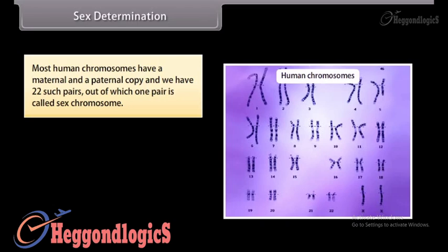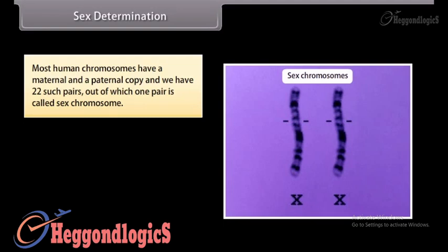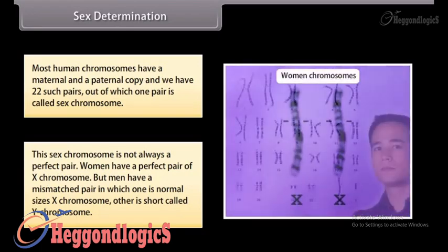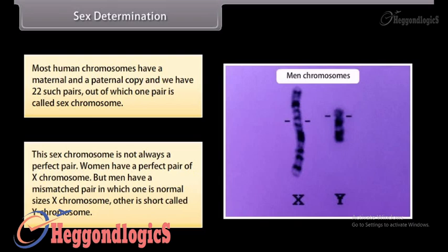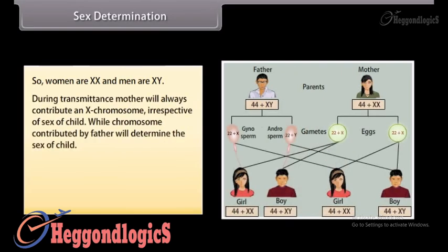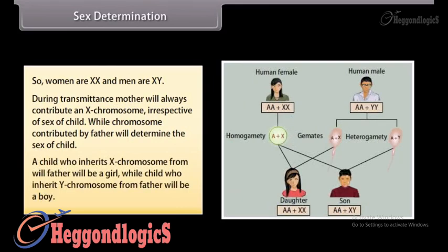Most human chromosomes have a maternal and a paternal copy, and we have 22 such pairs, out of which one pair is called the sex chromosome. Women have a perfect pair of X chromosomes, but men have a mismatched pair — one normal-sized X chromosome and one short Y chromosome. So women are XX and men are XY. During reproduction, the mother always contributes an X chromosome regardless of the sex of the child, while the chromosome contributed by the father determines the sex of the child. A child who inherits an X chromosome from the father will be a girl, while a child who inherits a Y chromosome from the father will be a boy.